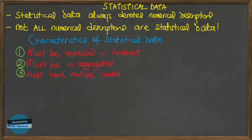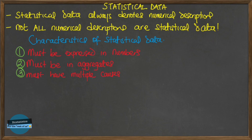The third characteristic is that statistics must have multiple causes — they are affected to a great extent by multiplicity of causes. For example, statistics of malaria are affected by various factors such as the amount of rainfall, the season, the presence of female anopheles mosquitoes, weather conditions, etc. The fourth characteristic is that statistics must be accurate. Statistics are enumerated or estimated according to a reasonable standard of accuracy. Data collected by counting or measurement should be exact and accurate, not mere estimates.